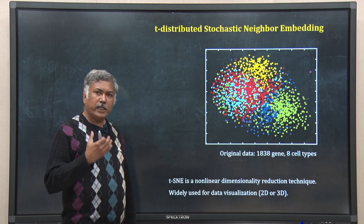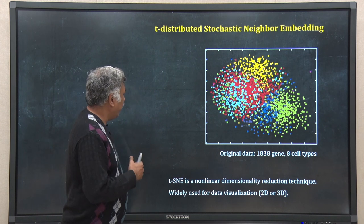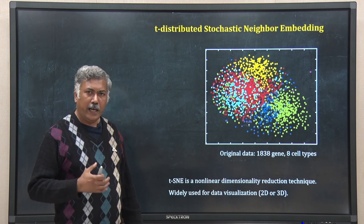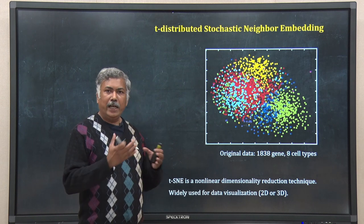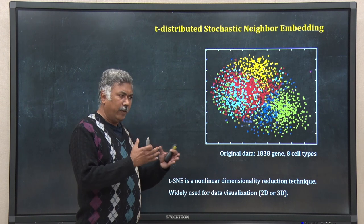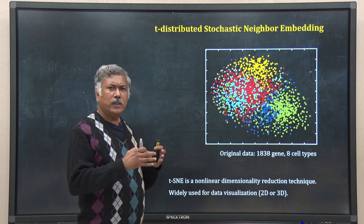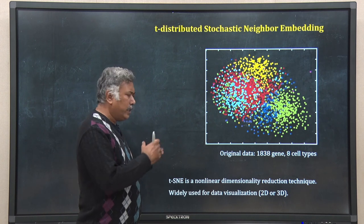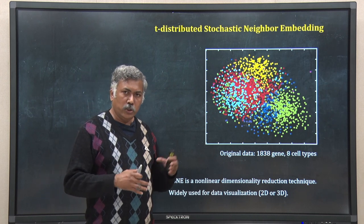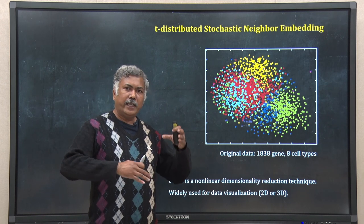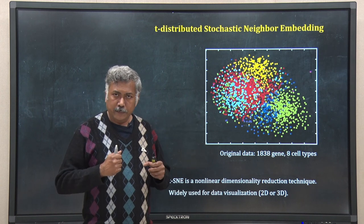Before I explain what T-SNE is, let me give you one example. In this figure, I have a gene expression dataset for around 8 cell types. Each cell type has hundreds of cells and for around 2000 genes — 1800 something — we have measurements for gene expression. So you can imagine the dimension of the data is then 18000 something, so we cannot visualize it.